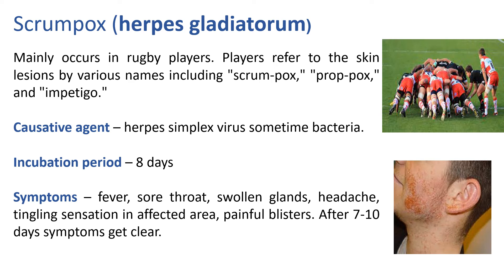Players refer to the skin lesions by various names including scrum pox, pox, and impetigo. The causative agent of this disease is herpes simplex virus, and sometimes bacteria are also responsible. The incubation period of scrum pox is 8 days. Symptoms are fever, sore throat, swollen glands, headache, tingling sensation in the affected area, and painful blisters. After 7 to 10 days, symptoms get clear.